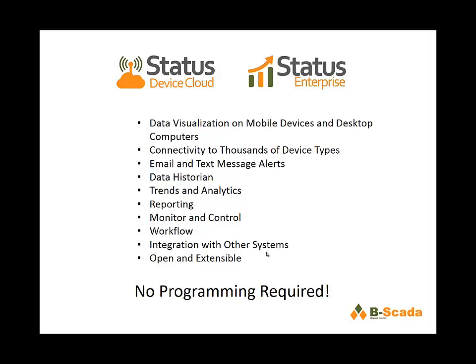You can do data visualization on mobile devices and desktop computers. We have connectivity to thousands of different types of sensors and PLCs, web services, databases, and all sorts of different things. When values go out of range, you can get email or text message alerts to let you know about what's happening within your system. There's a historian for archiving your data so that you can use that for compliance or for generating reports and analytics.